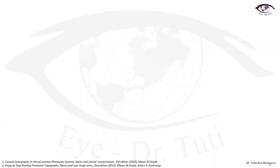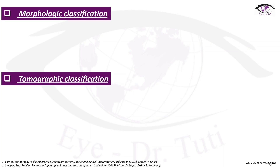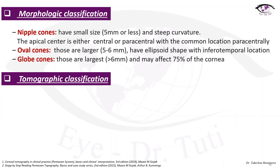Classification. There is a morphologic classification and a tomographic classification. Morphologic classification includes nipple cones, which have a small size of 5 mm or less and steep curvature. The apical center is either central or paracentral. There are also oval cones and globe cones. Oval cones are larger than nipple cones, usually 5–6 mm, and globe cones are larger than 6 mm and may affect 75% of the cornea.